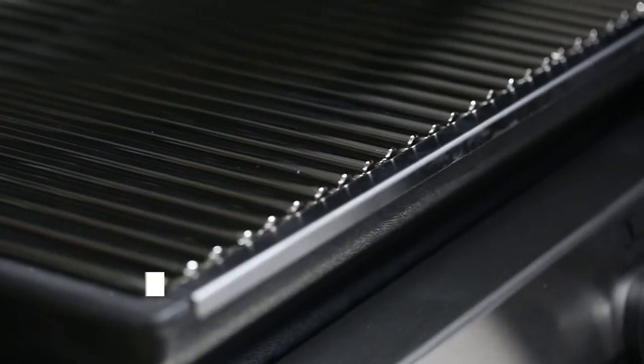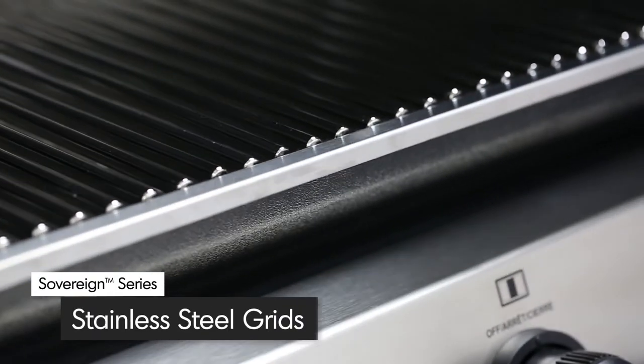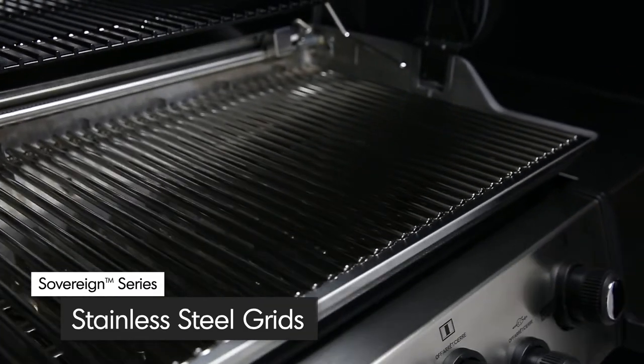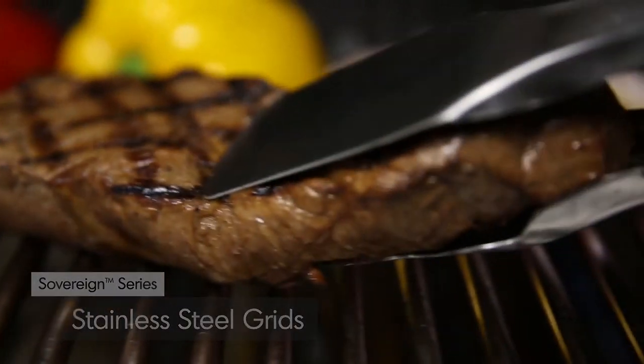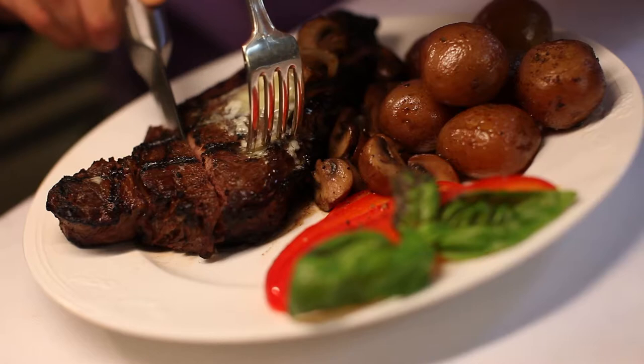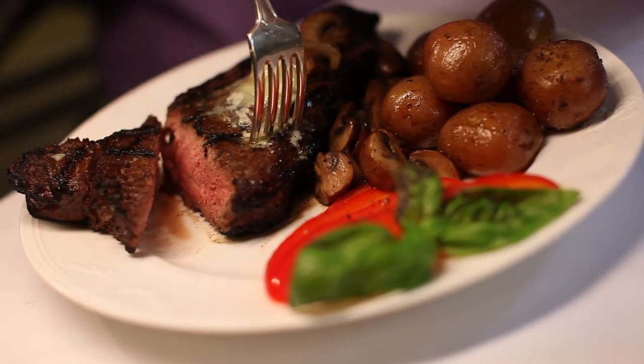All Sovereign models come with extra-heavy, professional-grade stainless steel cooking grids. These grids deliver excellent heat retention and exceptional searing power to lock in both juices and flavor.